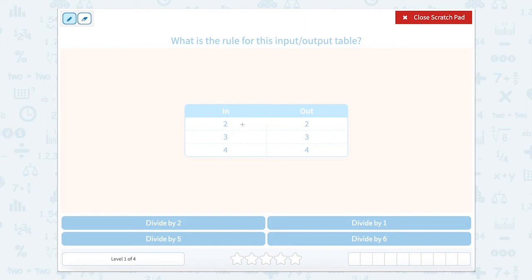So in an input-output table we look at going from the input to the output. So what is happening, and it has to be the same across, that is making a 2 turn into a 2, a 3 turn into a 3, and a 4 turn into a 4.